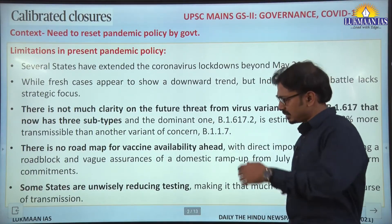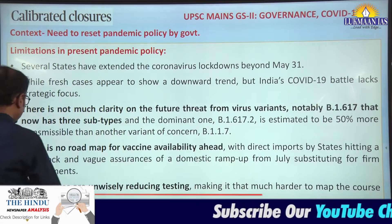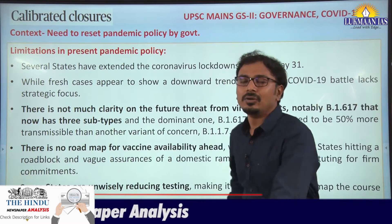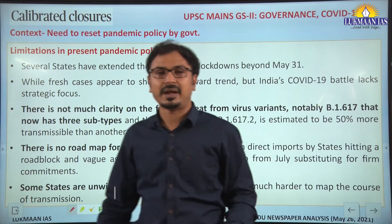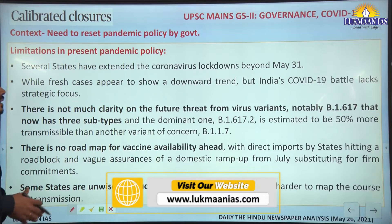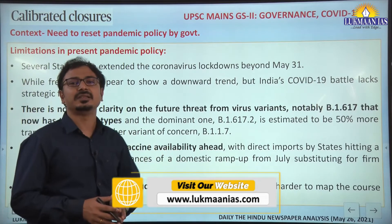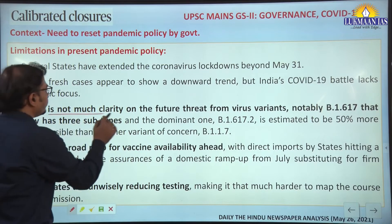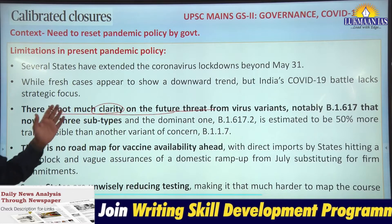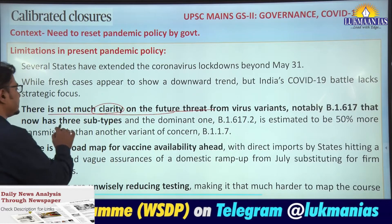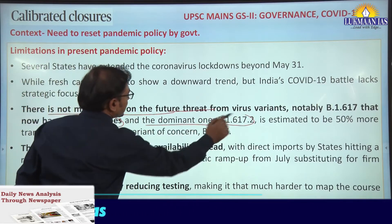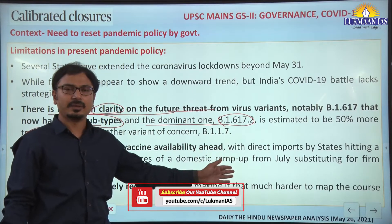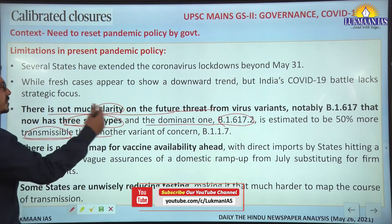Now, 'Calibrated Closures': this article has the context of different states extending lockdown periods beyond June 1st. There is also a need to bring changes in pandemic policies of both the central and state governments, as there are flaws in the current pandemic policy. There is need of much clarity on future threats from virus variants, notably the double mutant variant first found in India, which has three subtypes. The dominant one is estimated to be 50% more transmissible than other variants of concern like B.1.1.7.